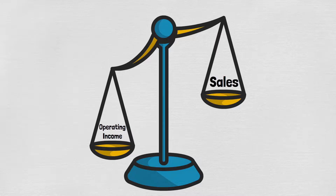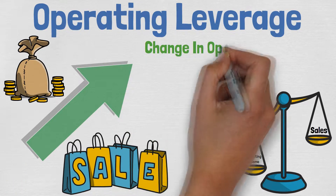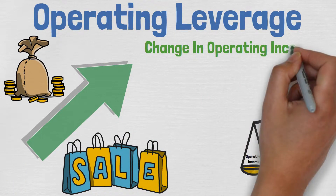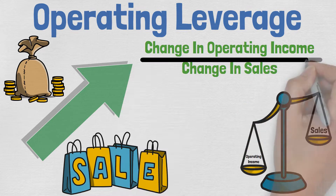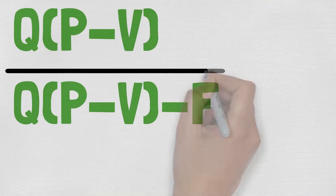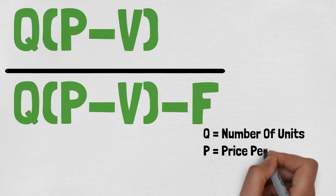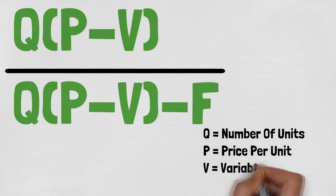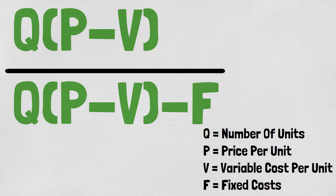The degree of operating leverage can be calculated in many different ways. You can divide the change in operating income by the change in sales, or use the formula where Q is the number of units, P is the price per unit, B is the variable cost per unit, and F is the fixed costs.